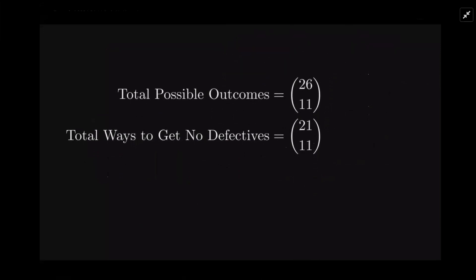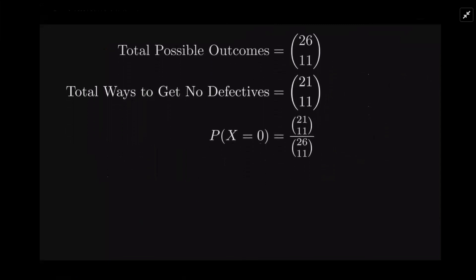From those 21 we're going to choose 11. So that's all the possible ways to do no defects. The probability that X equals zero is that fraction. What we want is 1 minus that, so everything except that.